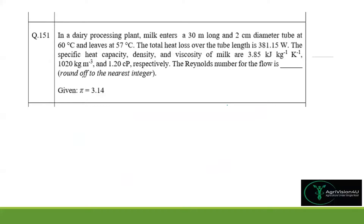Coming to question number 151: in a dairy processing plant, milk enters a 30-meter long, 2-centimeter diameter tube at 60°C and leaves at 57°C. The heat capacity, density, and viscosity of the milk are given. We have to find the Reynolds number. The formula is Re = ρ·V·D / μ. We are given density, viscosity, and the diameter, but we need to find the velocity first.